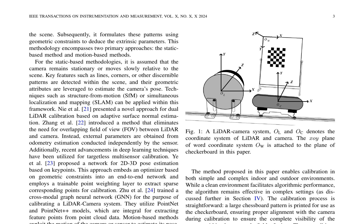Recent advancements in deep learning have also been utilized for targetless multi-sensor calibration. For instance, Yi et al. proposed a network for 2D-3D pose estimation based on keypoints, which embeds an optimizer based on geometric constraints into an end-to-end network. Zhu et al. trained a cross-modal graph neural network for calibrating a LiDAR camera system, utilizing PointNet and PointNet++ models to extract feature points from point cloud data. Motion-based methods exploit the motion of the camera or sensor to estimate its pose, commonly using optical flow, visual odometry, or feature tracking algorithms.